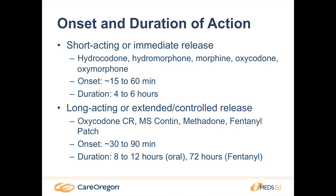I have a more detailed chart in your handouts on onset and duration of each opioid, but here's a general summary. Shorter-acting or immediate-release opioids generally take effect within 15 minutes to an hour and last 4 to 6 hours — which is why you've probably seen prescriptions written to take every 4 to 6 hours as needed. Long-acting or extended-release opioids generally have an onset of 30 to 90 minutes and a duration of 8 to 12 hours, some up to 24 hours, except for the fentanyl patch which is 72 hours.